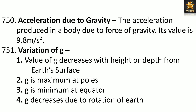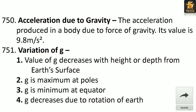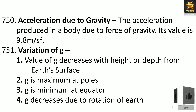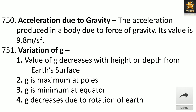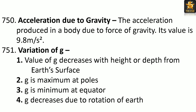Acceleration due to gravity: The acceleration produced in a body due to the force of gravity. Its value is 9.8 meters per second squared. Variation of g: Value of g decreases with height or depth from Earth's surface. g is maximum at poles, minimum at equator, and decreases due to rotation of the Earth.